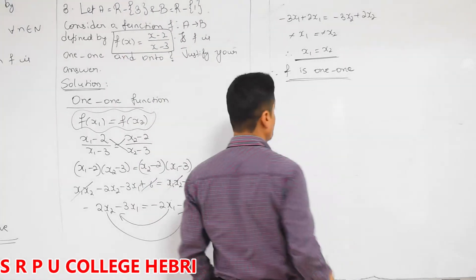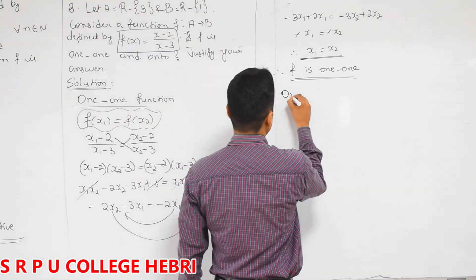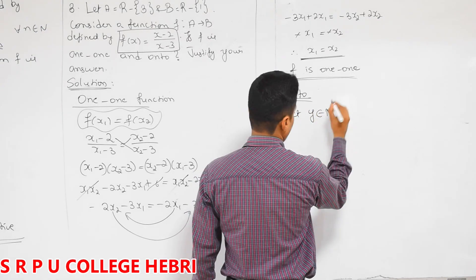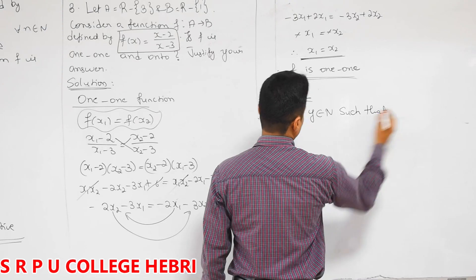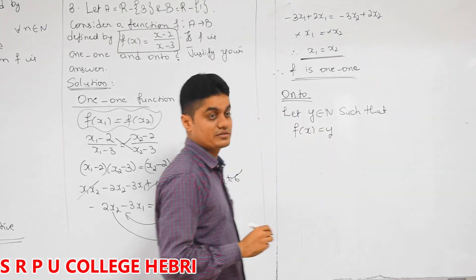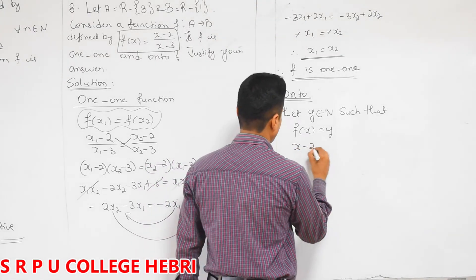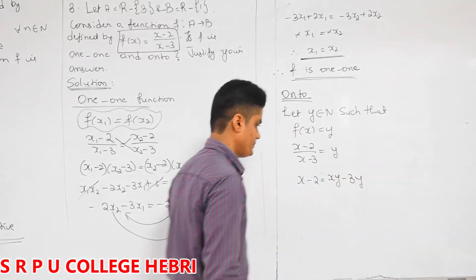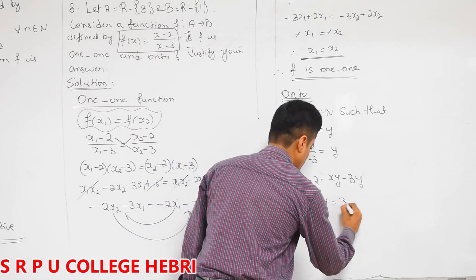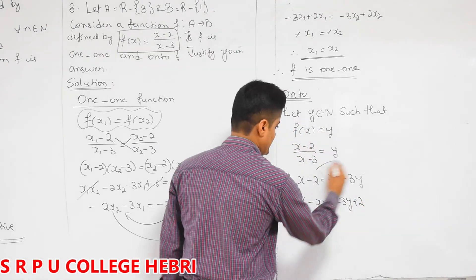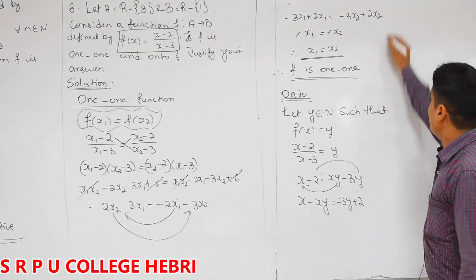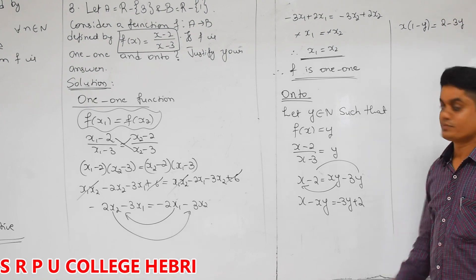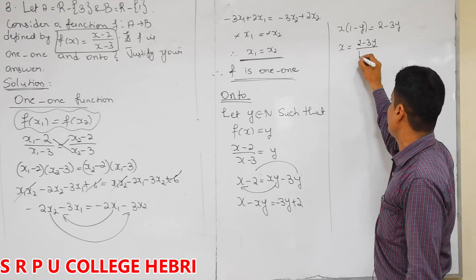One part is verified — f is 1-1. Next, check onto. Take an element y belonging to the co-domain. Such that f of x equals y. So (x − 2)/(x − 3) = y. Cross-multiplying and rearranging: x − xy = −3y + 2. Taking x outside from the left: x(1 − y) = 2 − 3y. Therefore x = (2 − 3y)/(1 − y).